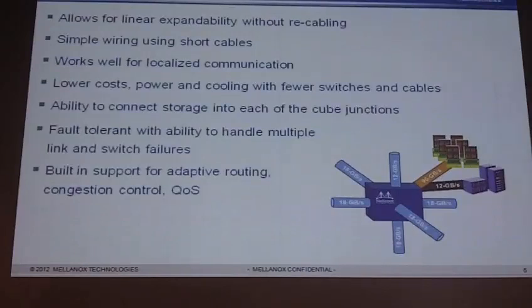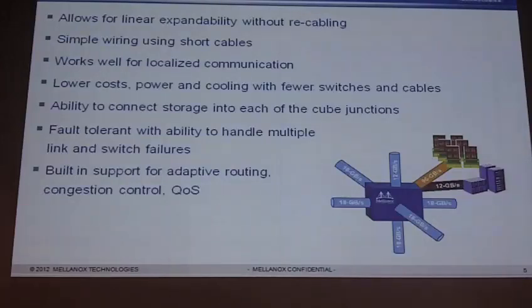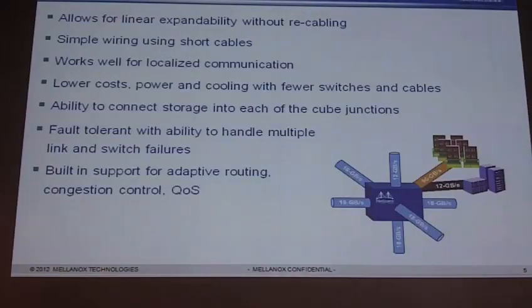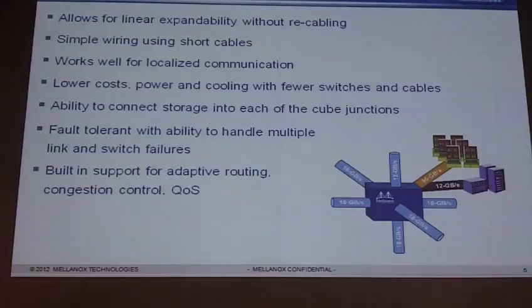Some of the benefits of this 3D Taurus: it allows for linear expandability without recabling. With a fat tree, if I want to add a bunch of servers, a lot of times I'll have to recable the whole fat tree. With 3D Taurus, I can simply unconnect one of the ends, add more nodes, and then reconnect it back up. It allows for simple wiring using shorter cables, it works well for localized communication, and it provides lower costs, power, and cooling because it has fewer switches and cables. We also have the ability to connect storage into each of these cube junctions.